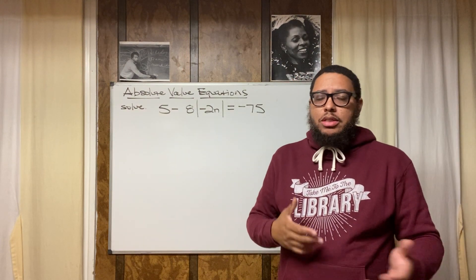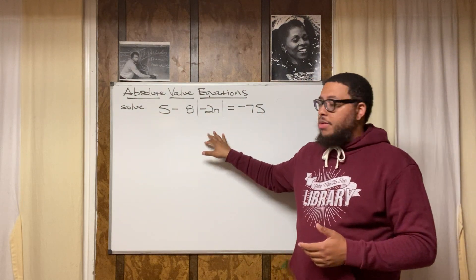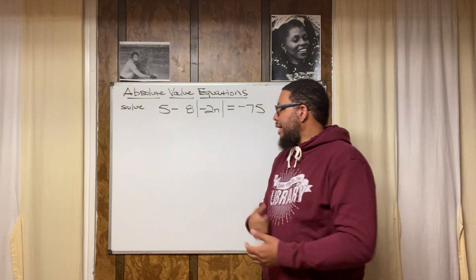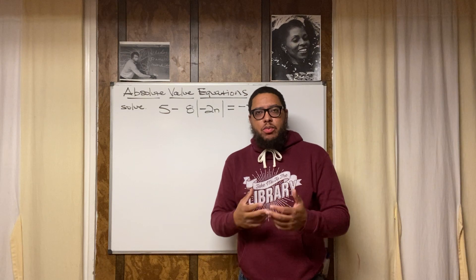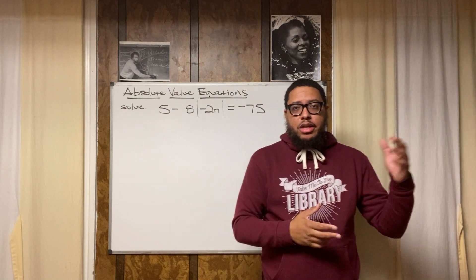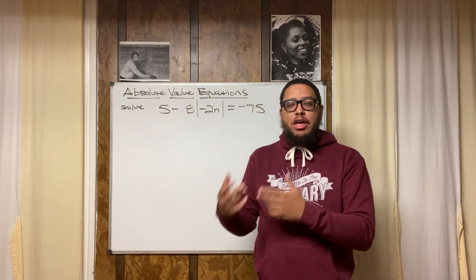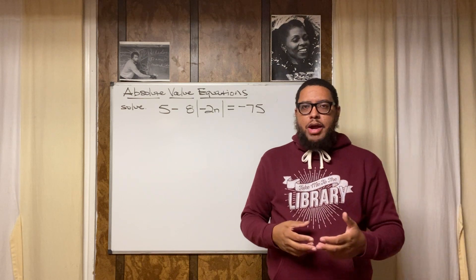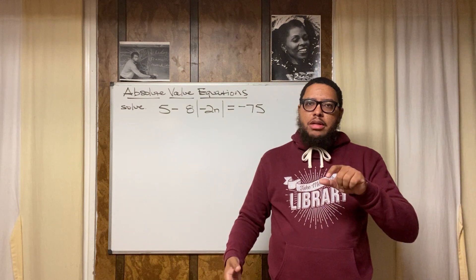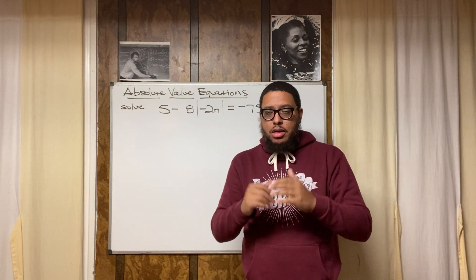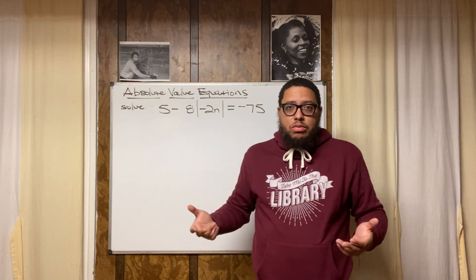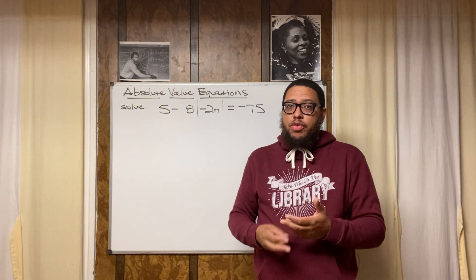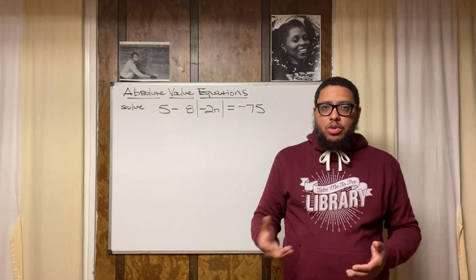That also brings us to why, when we solve absolute value equations — and even absolute value inequalities — we set up two equations. We're going to isolate the absolute value by itself, and then create two separate equations. Why? Because the expression inside the absolute value bars could be equal to a negative number or a positive number. For example, if the absolute value equals five, the value inside could be negative five or positive five. That's why you always end up with two equations.